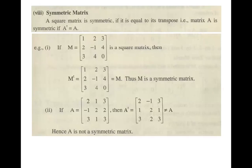A square matrix is symmetric if it is equal to its transpose. We have to remember and understand that matrix A and its transpose A^T are equal — then matrix A is called a symmetric matrix. The transpose operation converts rows into columns, and this process of changing rows into columns to make a new matrix is called the transpose of the original matrix.